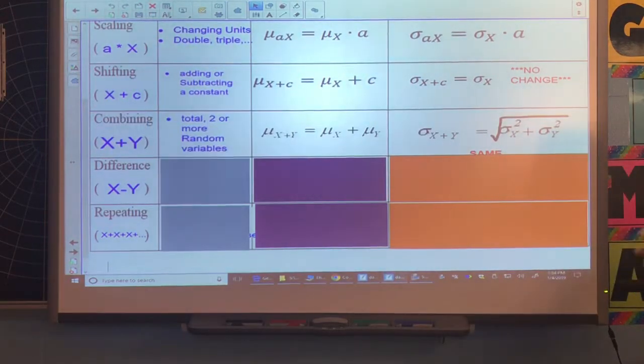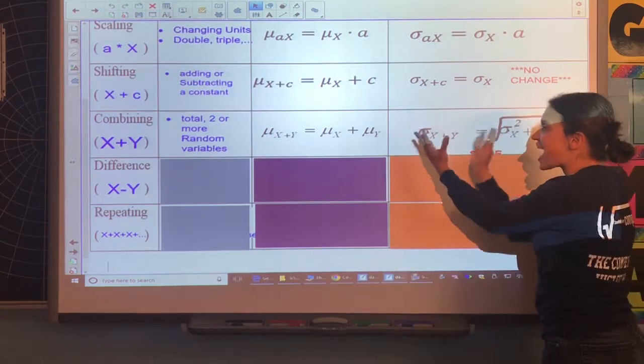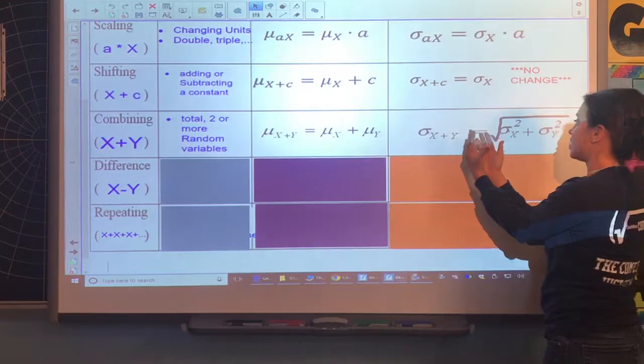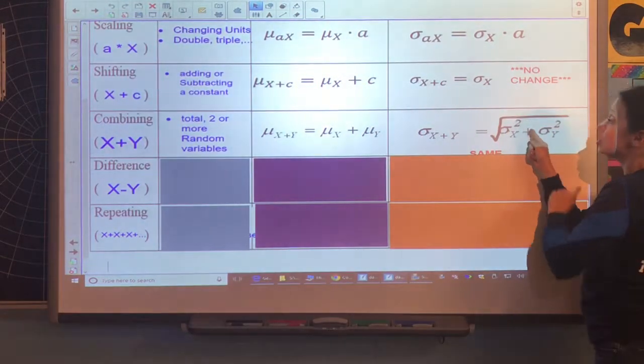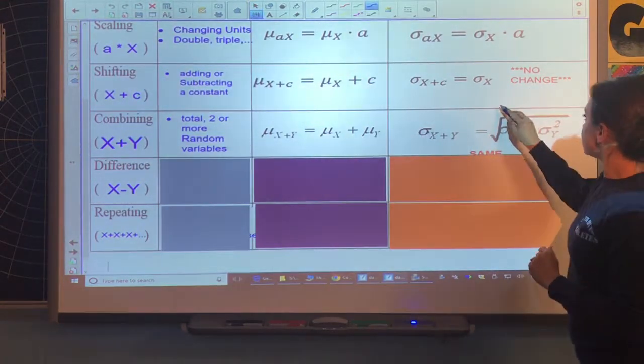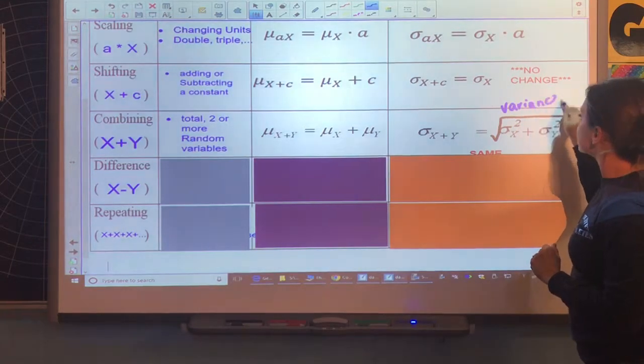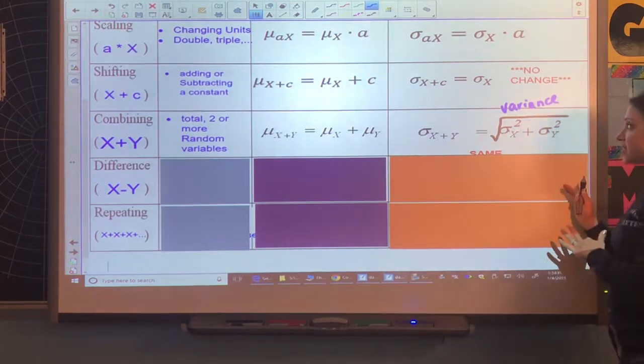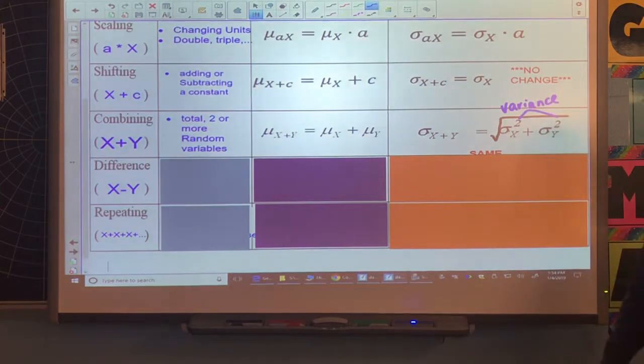The standard deviation though, you cannot just add the two different standard deviations. You have to add the variance. Notice it's squared. So you're adding the variance of your first random event plus the variance of your second random event. You must use variance here, then you take the square root.